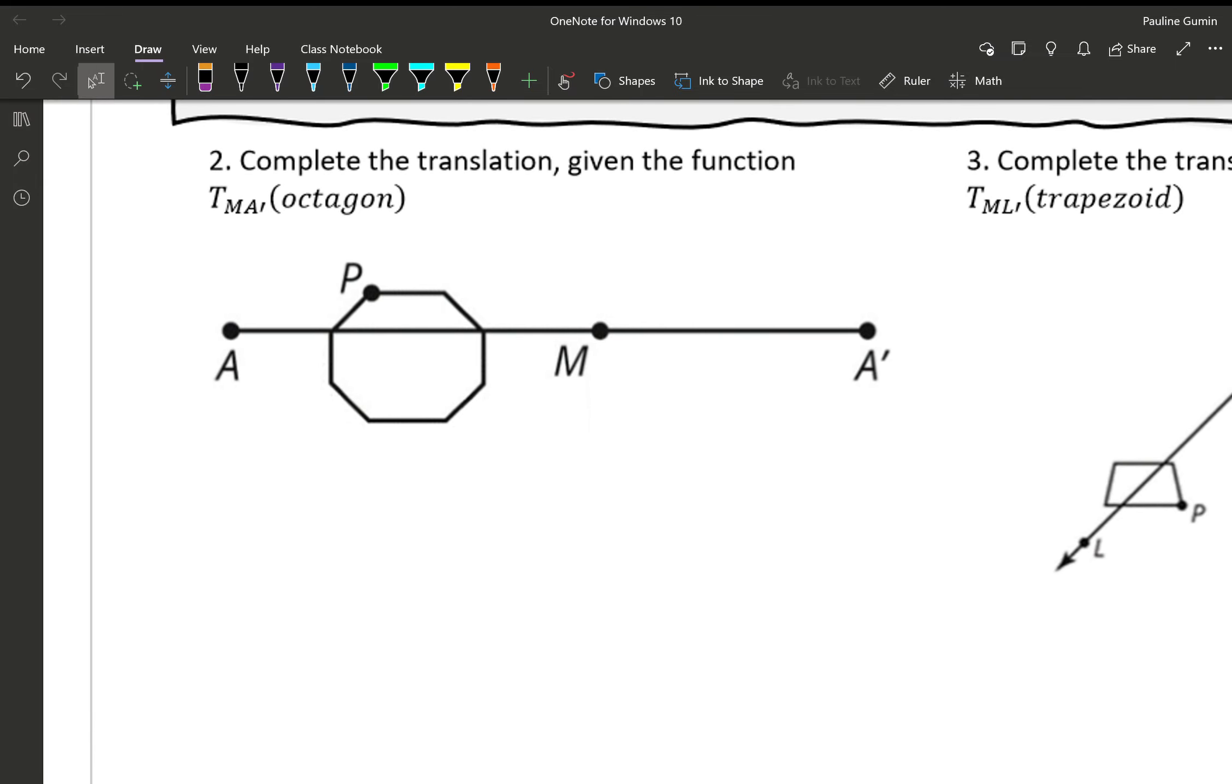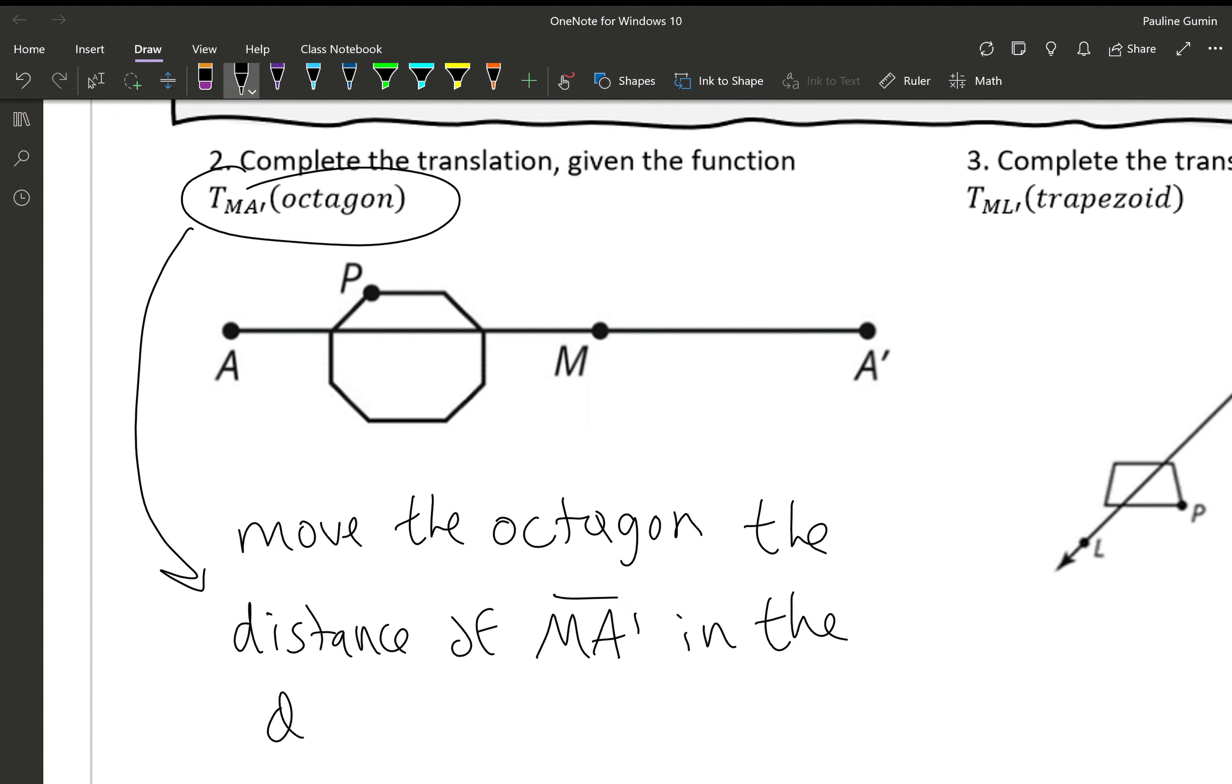So let's look at number two. Number two has a t with an MA prime on the subscript and it says octagon. Let's translate that. This means move the octagon the distance of MA prime in the direction of MA prime. This is what that looks like. Here we have MA prime. Now the order of the letters matters a lot in geometry. So we start at M and we go towards A prime. And that looks like we went to the right.